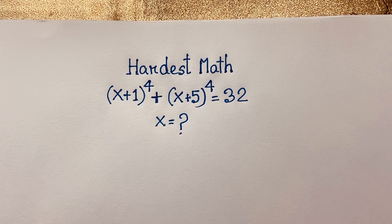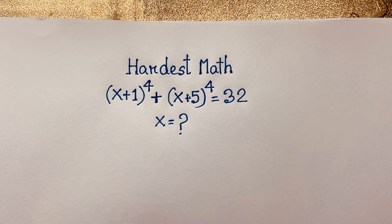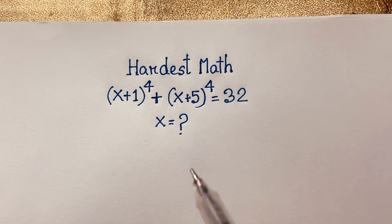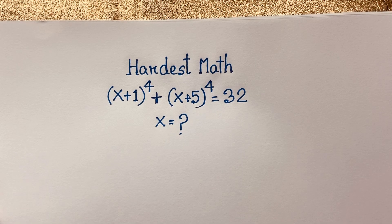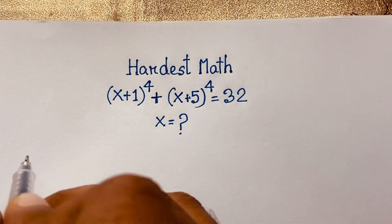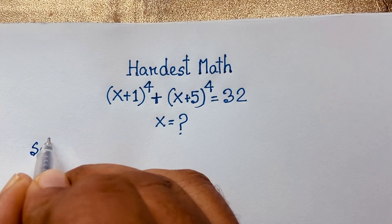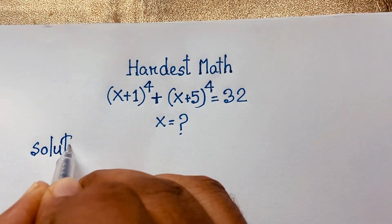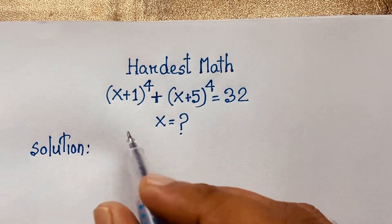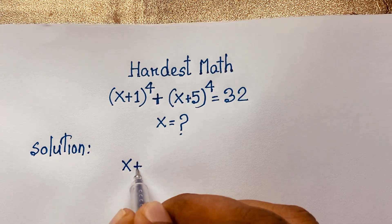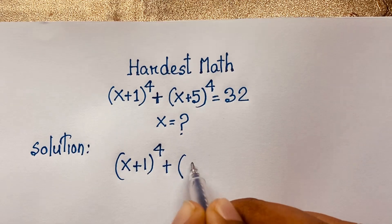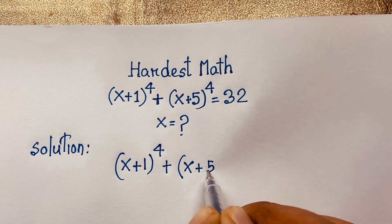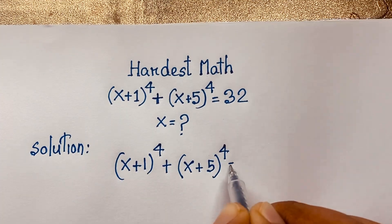Hello everyone, welcome to Russell's Classroom. Today we are solving an interesting math olympiad question: (x+1) whole to the power 4 plus (x+5) whole to the power 4 is equal to 32. x is equal to what? So I will solve this question step by step.